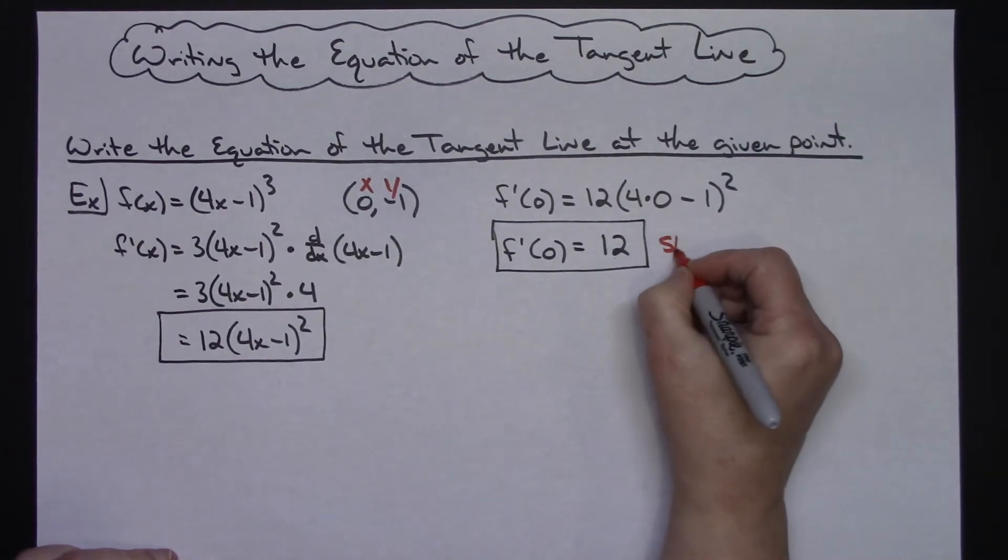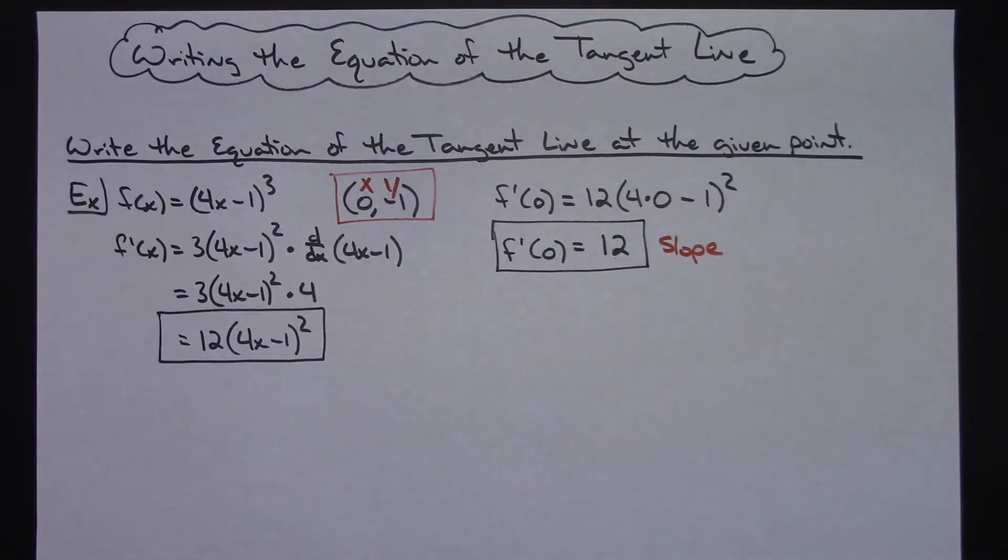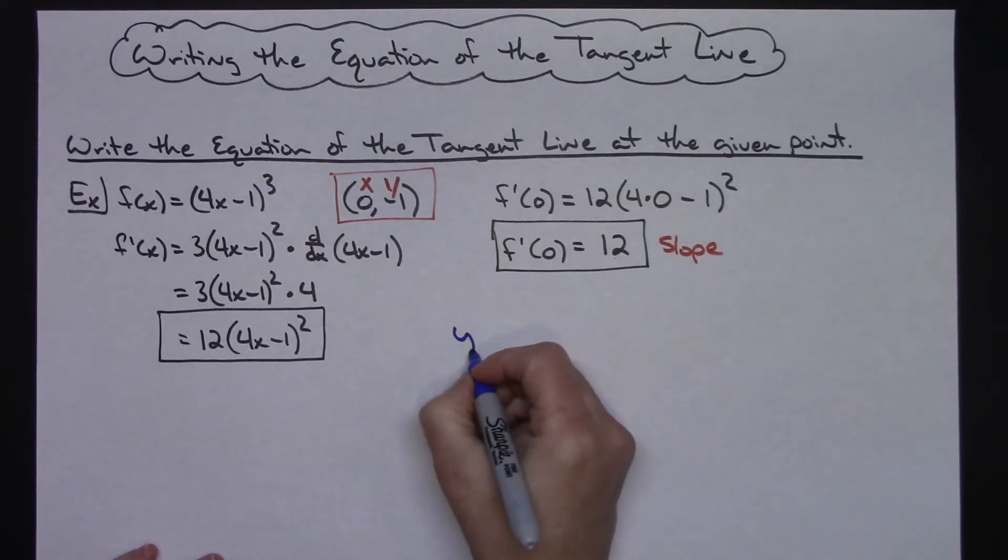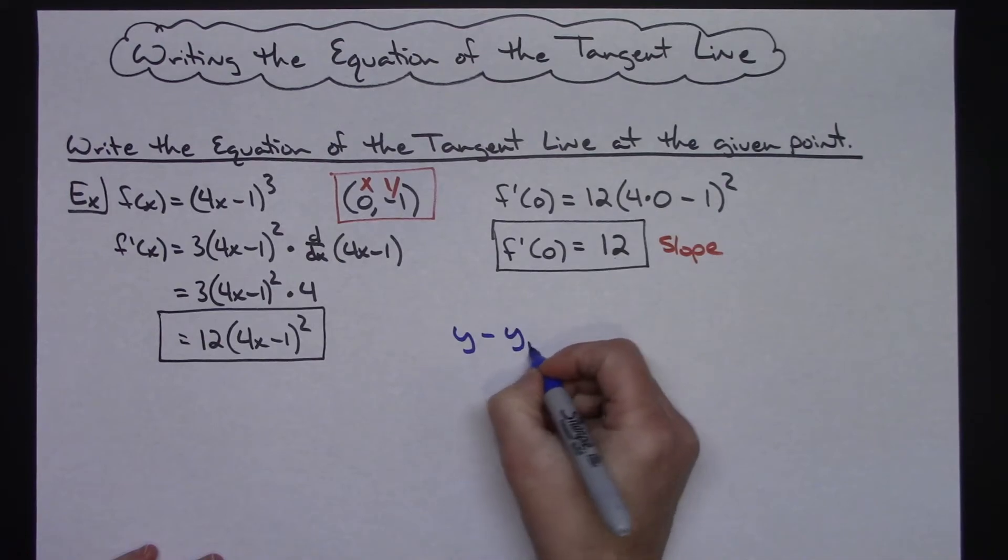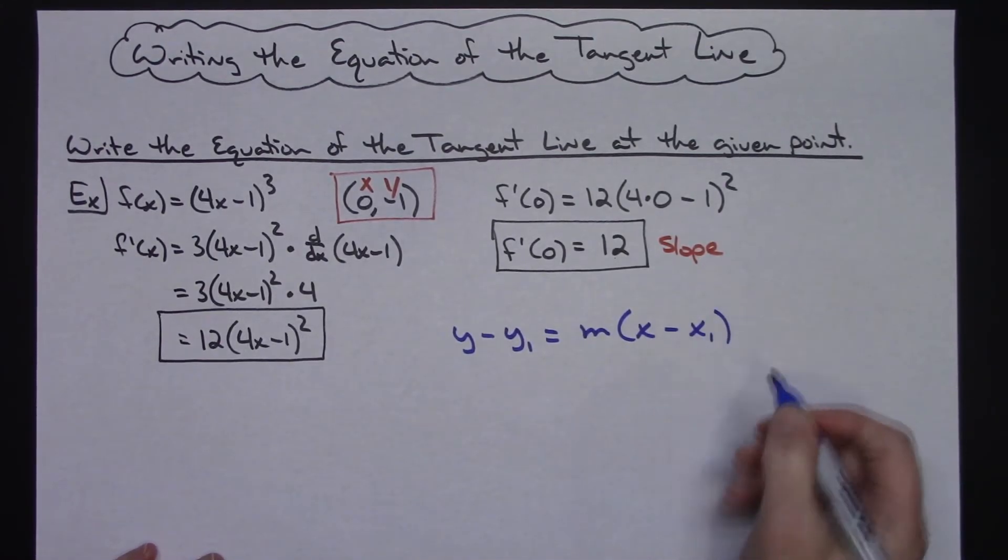So now I have my slope and I have a point, and as soon as I have the slope and a point then I can write the equation of that line. I'm going to choose to do point-slope form of my line: y - y₁ = m(x - x₁). And then after I do that I'm just going to leave it in that form.